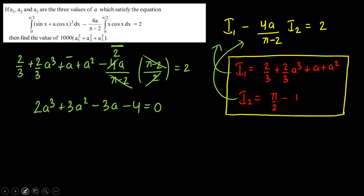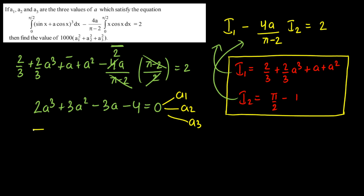We've obtained a cubic equation, which has three roots a1, a2, a3 as given. From Vieta's formulas, the sum a1 + a2 + a3 = −3/2.